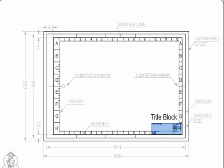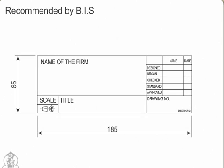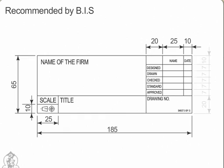Title Block. Space for the title block must be provided in the bottom right hand corner of the drawing sheet, as shown in the figure. The size of the title block as recommended by the BIS is 185mm × 65mm for all designations of the drawing sheet.